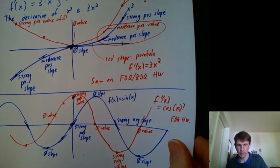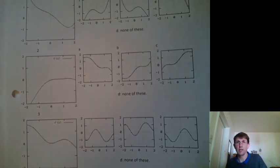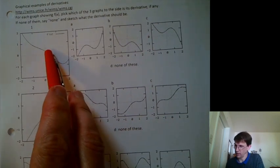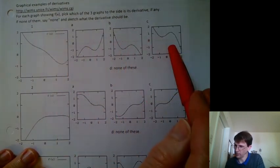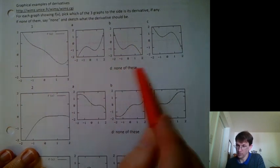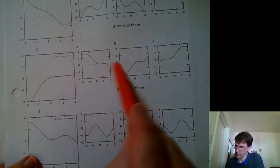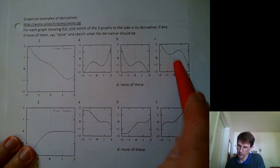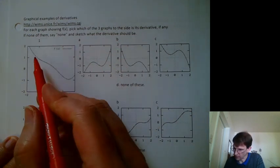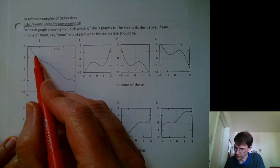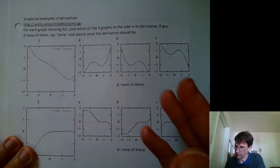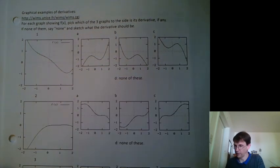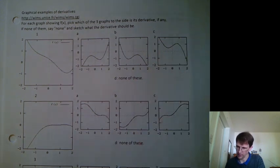So from here, our next job is to take a worksheet that I'm going to email out. So it has a graph, and then it has three candidates for what the derivative of that function is. Or maybe it's none of them. And then another graph and three candidates. So you need to look at these three and try to eliminate them. Like, say, oh, well, you know, here I've got a strong negative slope. And one of these has a strong positive value there. So it can't possibly be that graph. And maybe you'll eliminate all of them. Or maybe one of them you just can't eliminate. And then you'll say, yeah, that one's plausible.